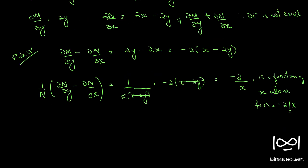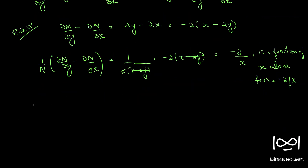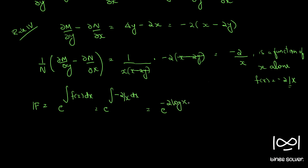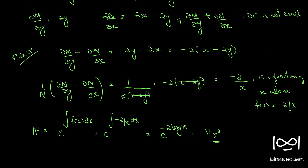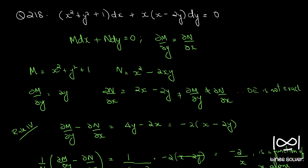In such cases we apply Rule 4 and find the integrating factor as e raised to the integral of f(x) dx, which is e^(∫−2/x dx). This gives us the integrating factor as 1/x².